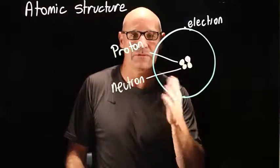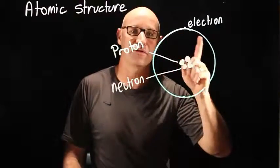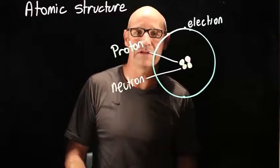Different atoms for different elements have different numbers of protons, neutrons, and electrons. And we're going to look at that in some detail now.